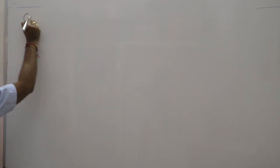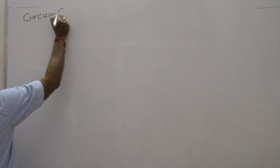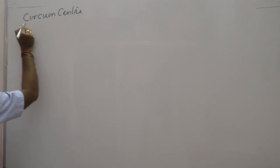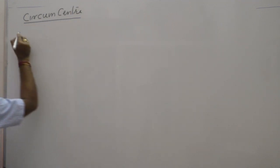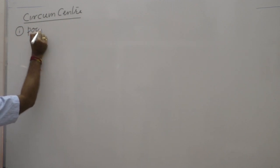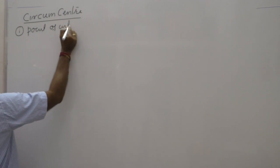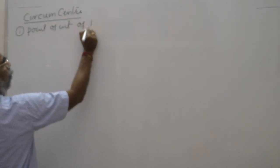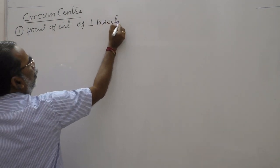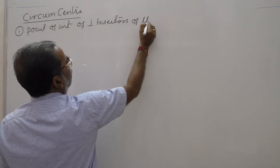Next: the circumcenter. The circumcenter is the point of intersection of the perpendicular bisectors of the sides of a triangle.